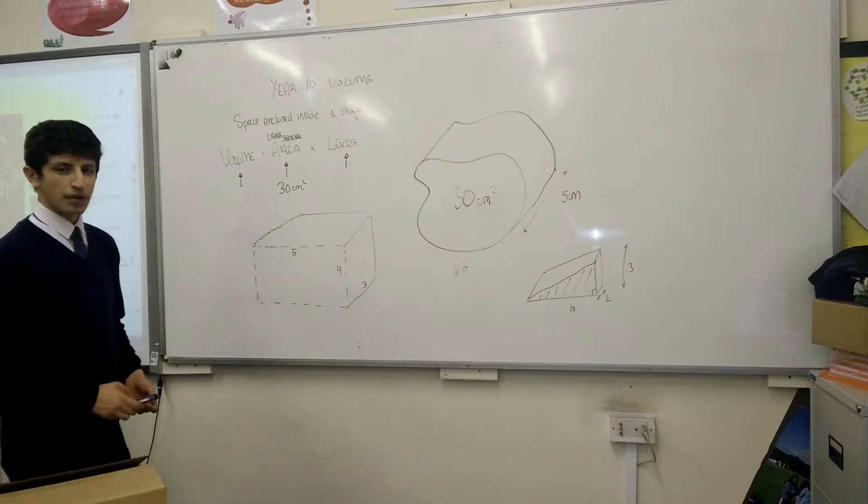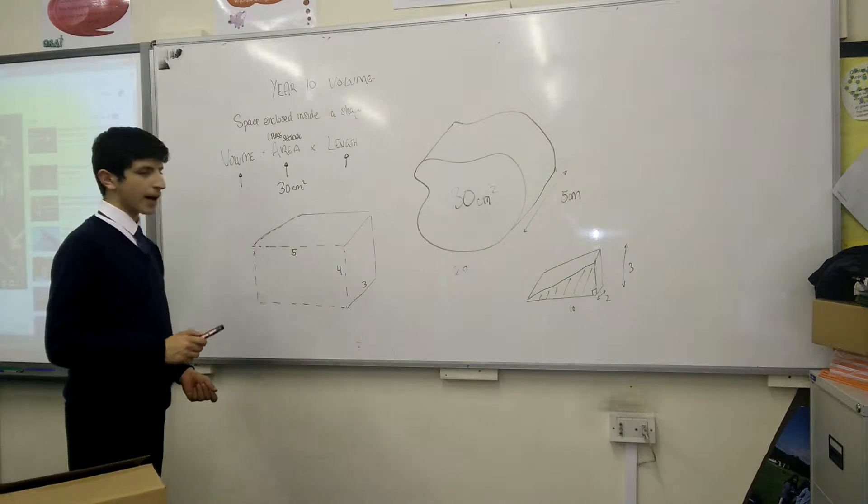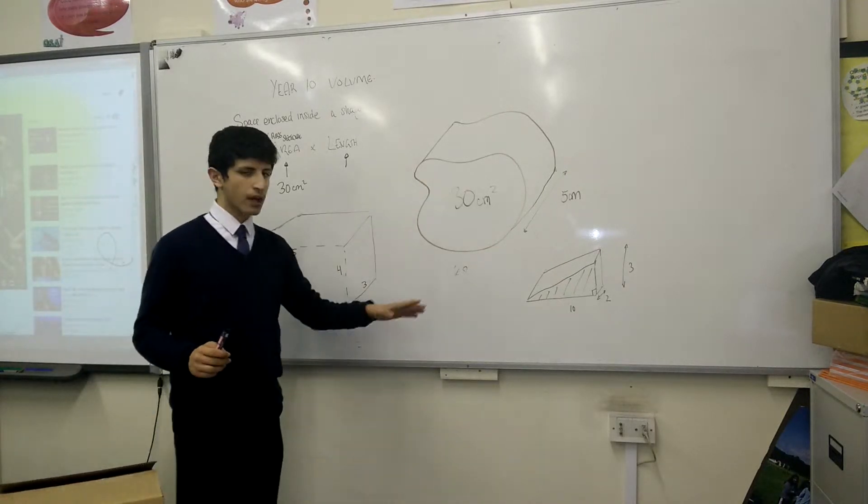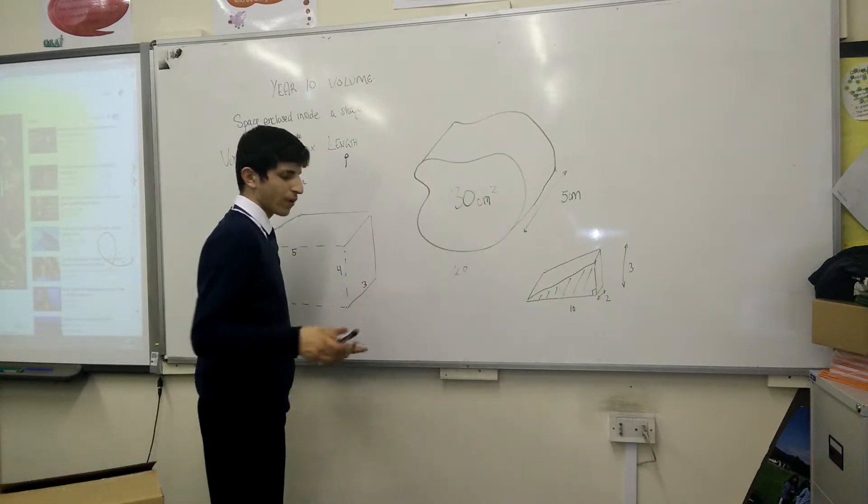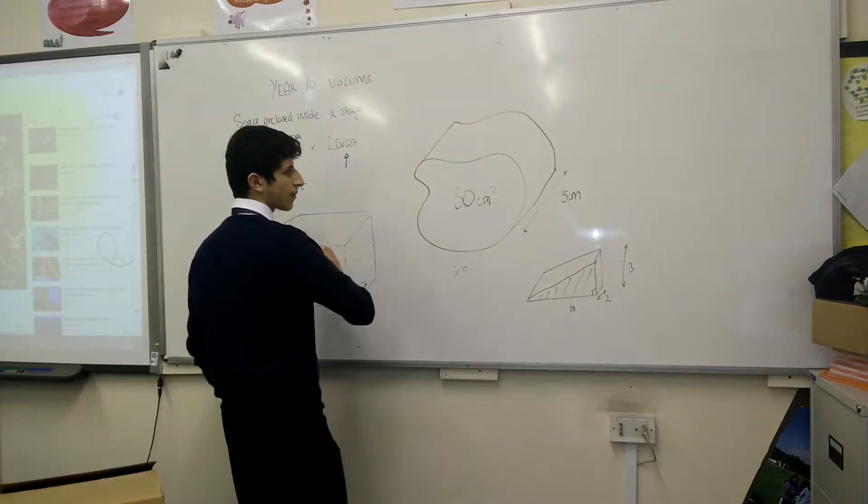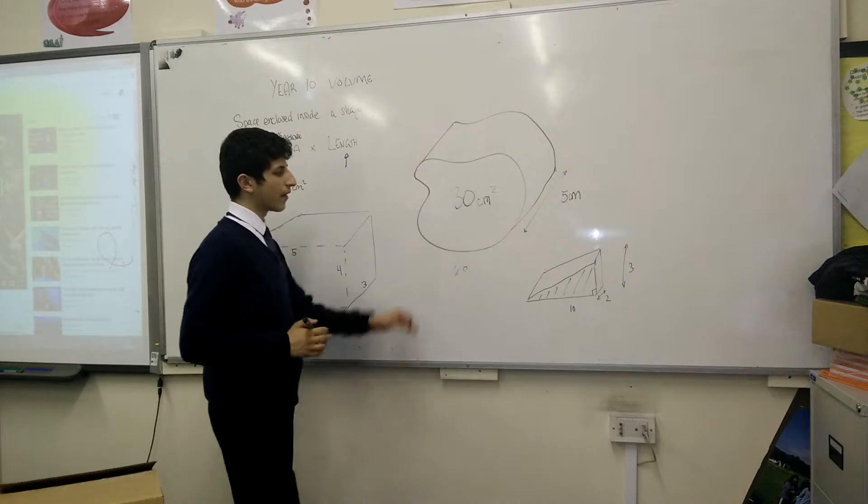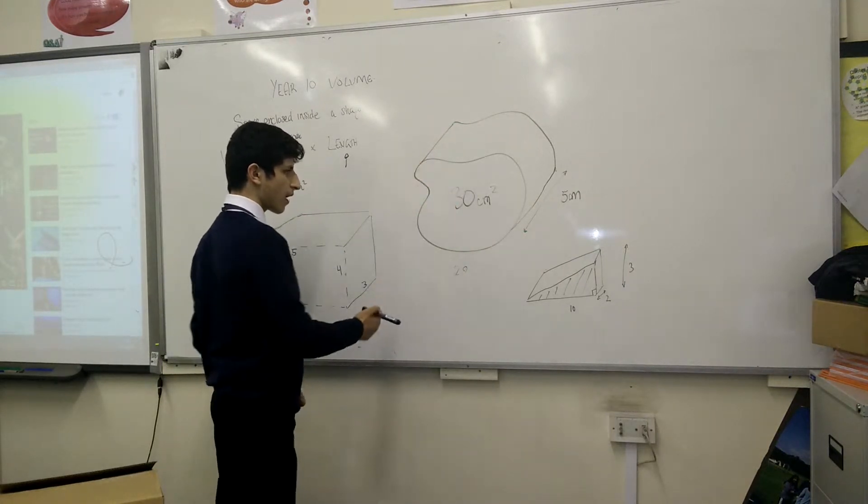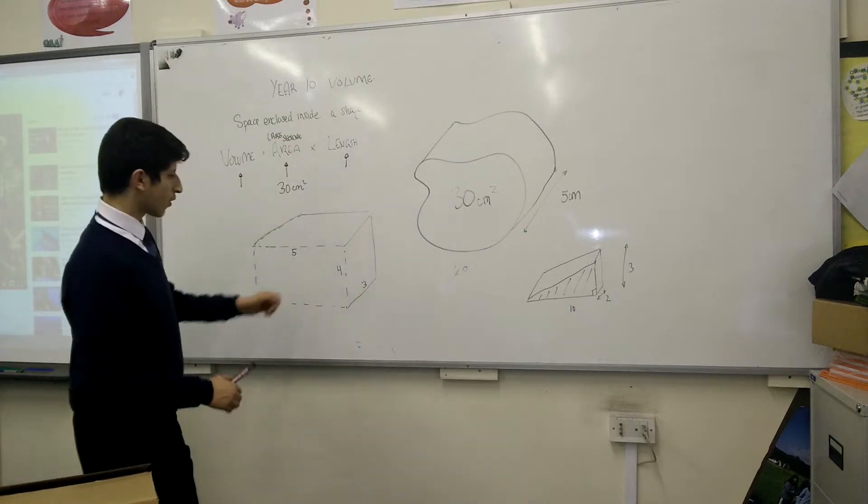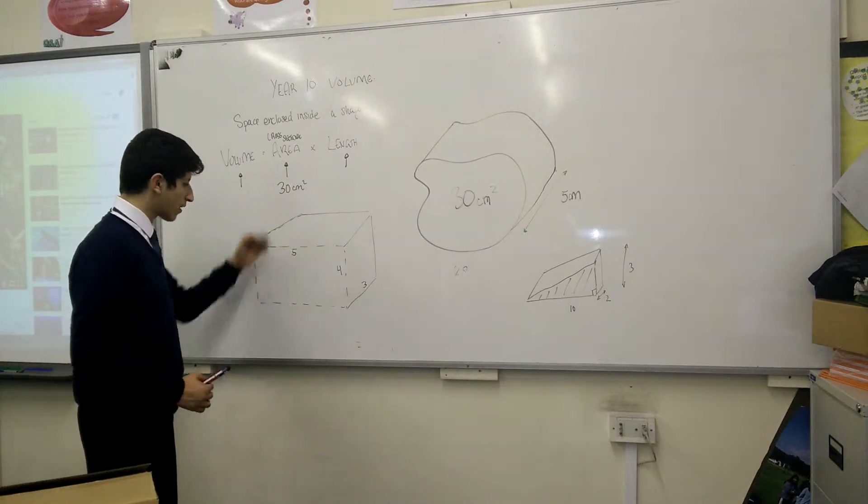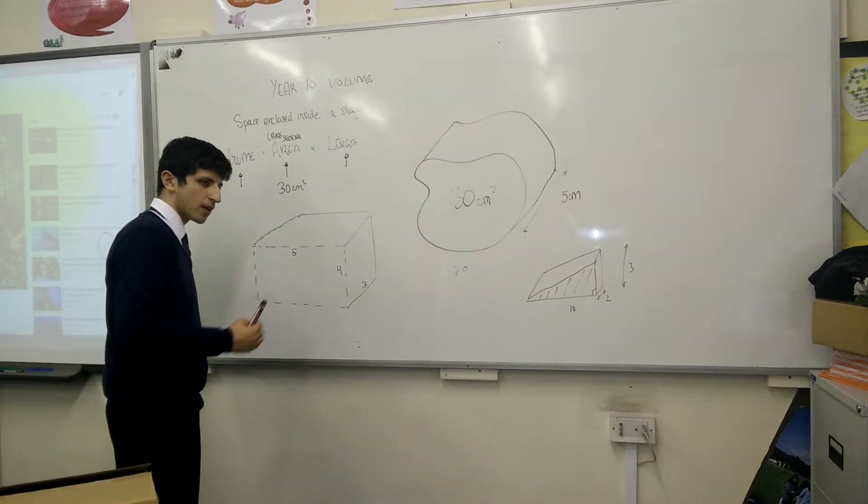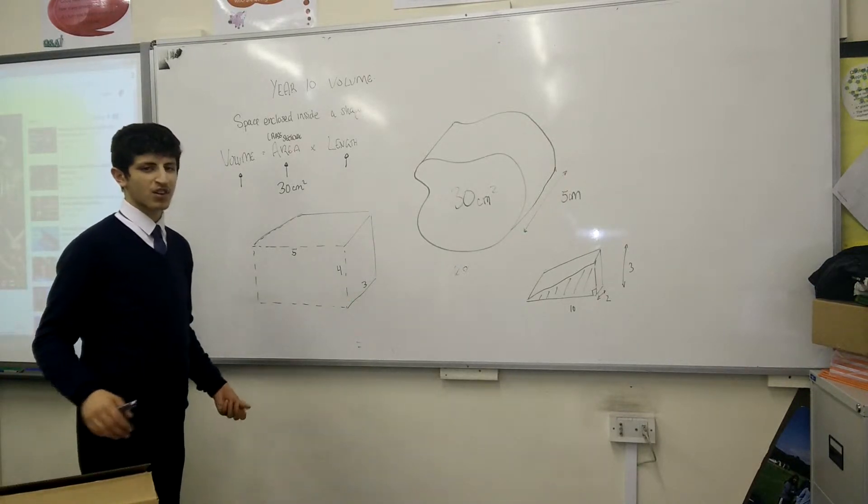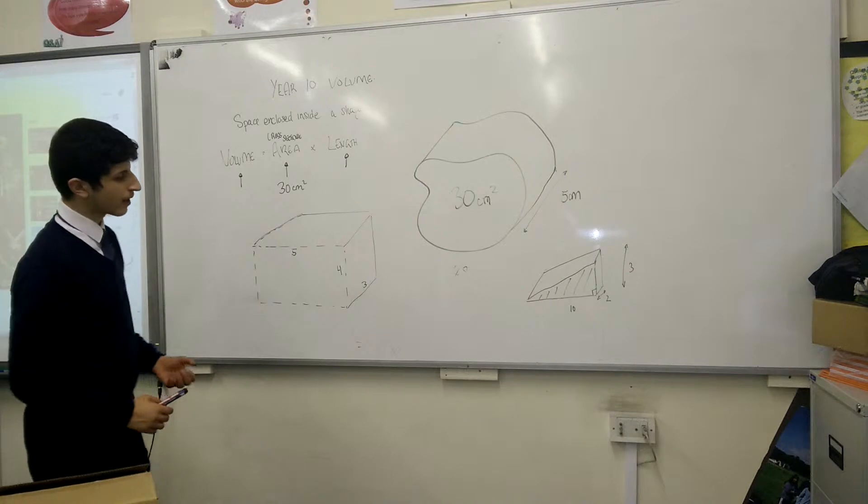There is actually a formula for volume but this is only applied to regular prisms. For example, this shape here, is it really a prism? Because whenever I cut across, the front face or the cross section area will always be the same. Likewise for example like a cuboid, if I chop up the cuboid at regular intervals, the front face will always be the same size, the same shape, the same area.